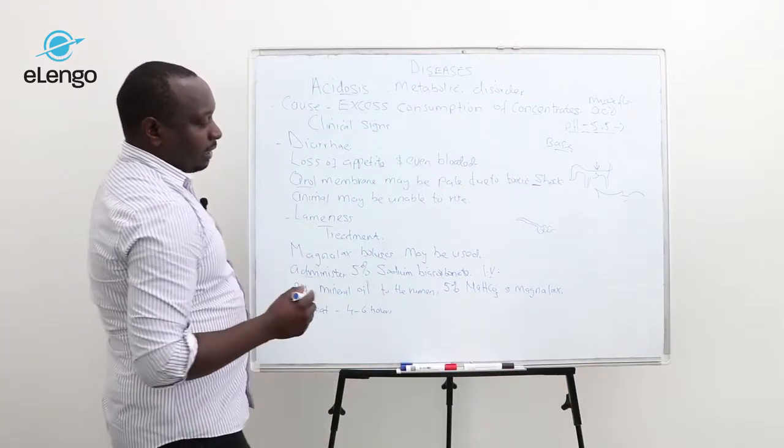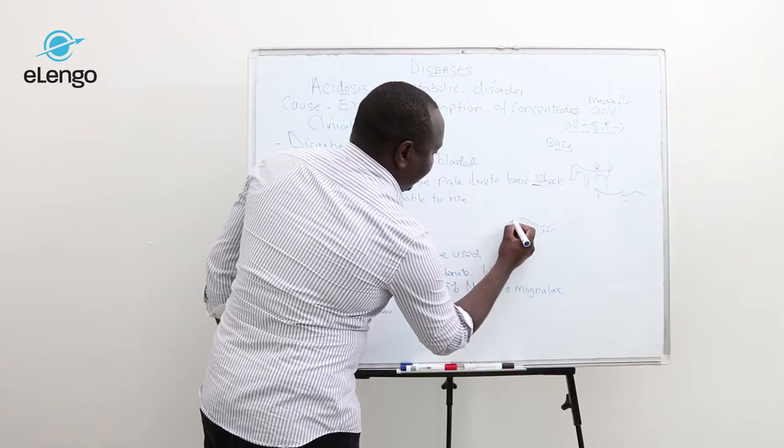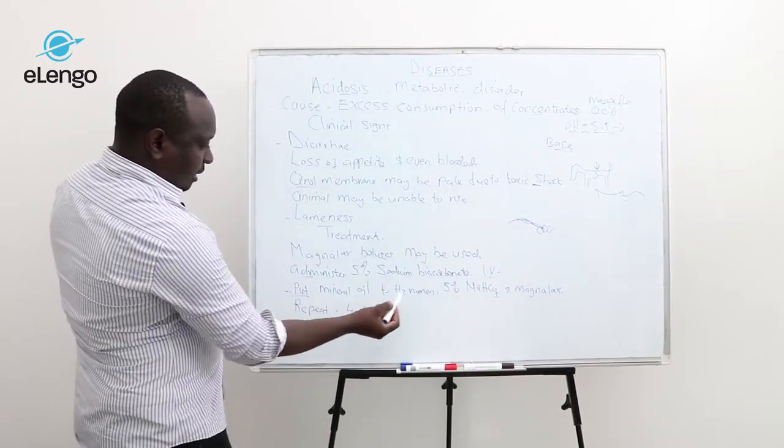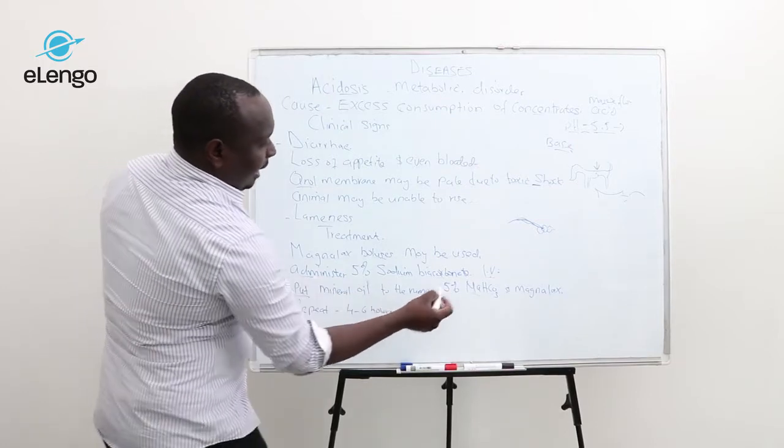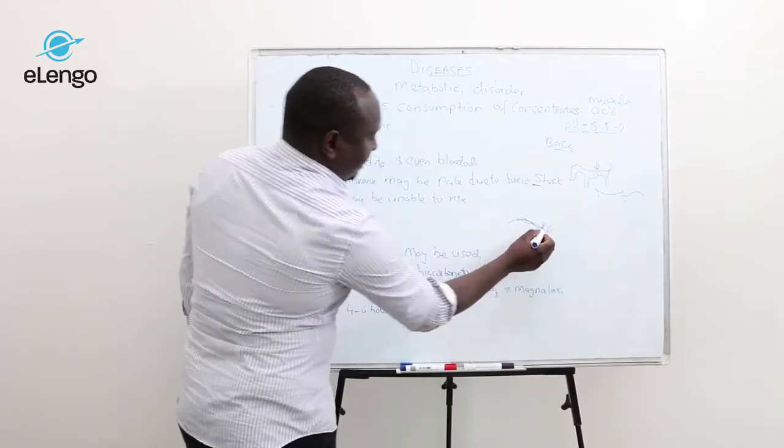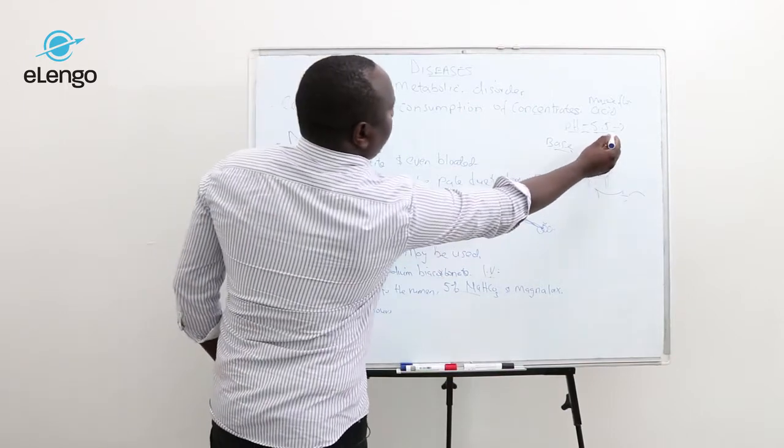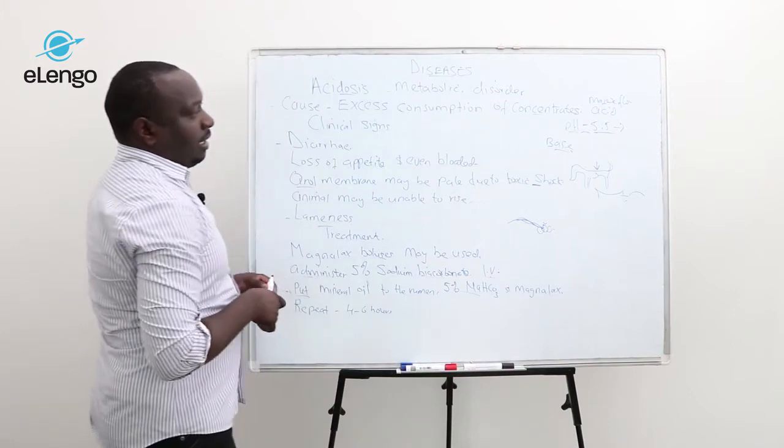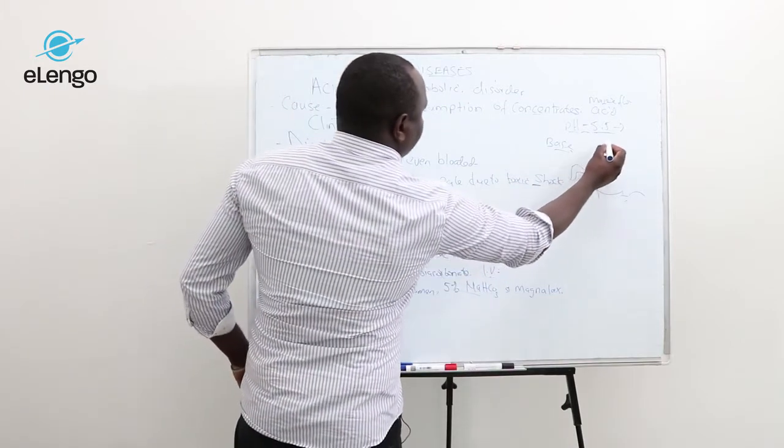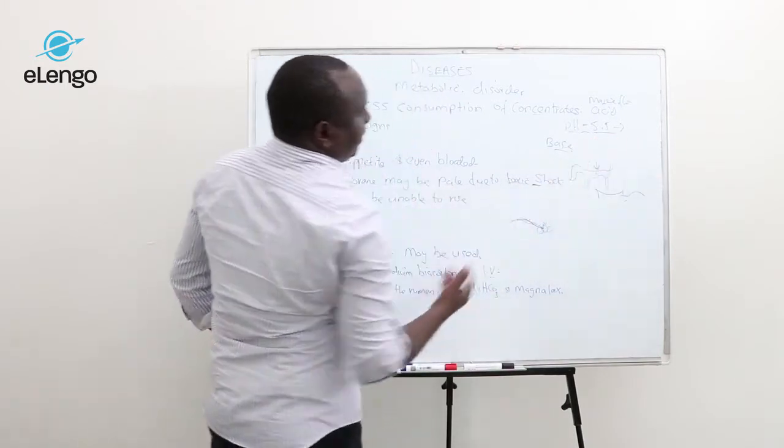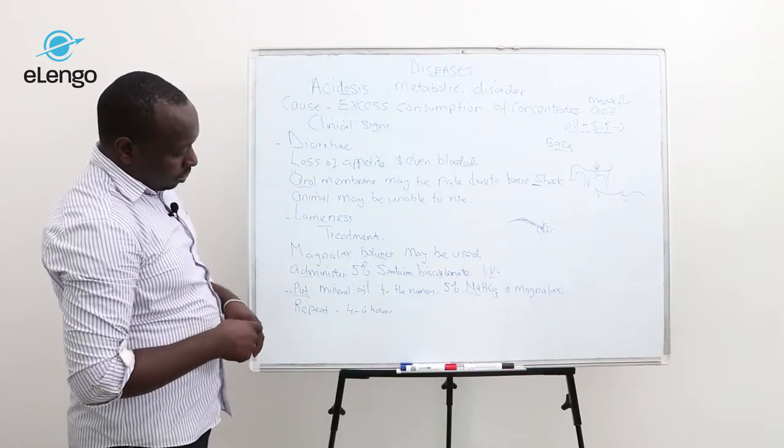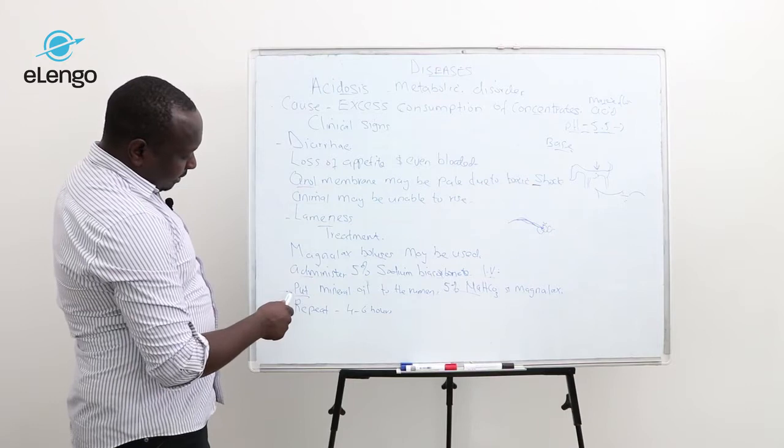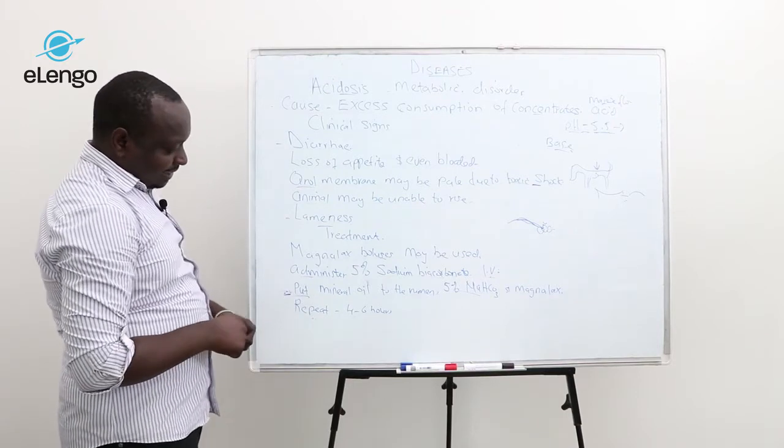You use a tube which is pipe-like and inserted directly to the rumen. These chemicals are put in the rumen to lower the pH from acidic to around 6 to 7 pH levels. This step is repeated every four to six hours.